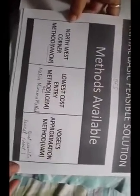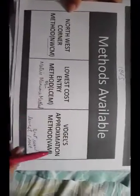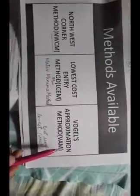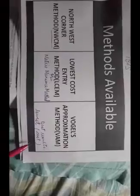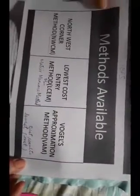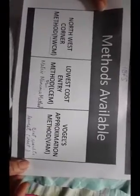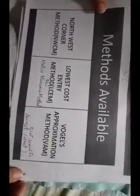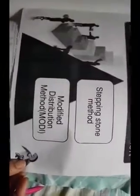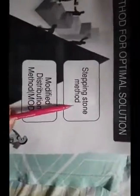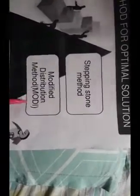The initial basic feasible solution, or IBFS, can be calculated using three methods: the Northwest Corner Method (NWC), the Lowest Cost Entry Method (LCEM), also known as the Matrix Minima Method, and Vogel's Approximation Method (VAM). Out of these three methods, Vogel's Approximation Method gives the best results — the lowest cost. You should apply the method as per the question asked, but otherwise Vogel's method is recommended as it gives the minimum cost solution. For the optimal solution, methods used are the Stepping Stone Method or the Modified Distribution Method, also known as the MODI method.